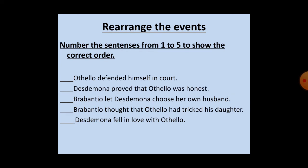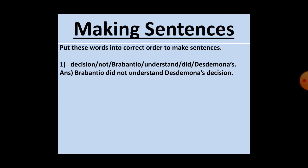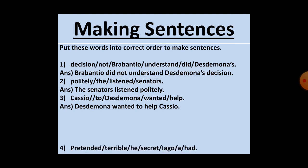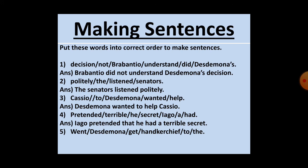Now I move towards the Making Sentences exercise. In this exercise we put the words in the correct order. First: 'decision not Brabantio understand did Desdemona' — correct order: Brabantio did not understand Desdemona's decision. Second: 'politely the listened senators' — correct order: The senators listened politely. Third: 'Cassio to Desdemona wanted help' — correct order: Desdemona wanted to help Cassio. Fourth: 'pretended terrible he secret Iago ahead' — correct order: Iago pretended that he had a terrible secret.